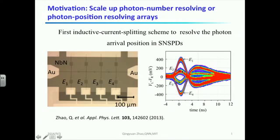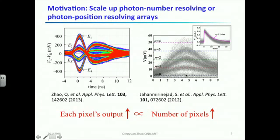Another example is from our previous work. We designed an inductive current splitting scheme to resolve the photon arriving positions in SNSPDs. The next figure is the photon array. For example, if the first element detects a photon, the differential pulse will give you a positive pulse and its amplitude is the highest. However, when a second one detects a photon, the differential pulse will also be positive, but its amplitude is a little bit lower. In both cases,